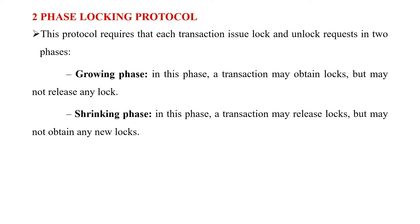In the shrinking phase, a transaction releases locks but may not obtain any new locks. Whatever data items were locked are released in this phase. No new lock facility is given under the shrinking phase — new locks can only be obtained in the growing phase. This is the major difference between the growing and shrinking phases.